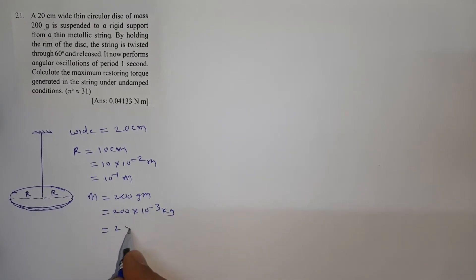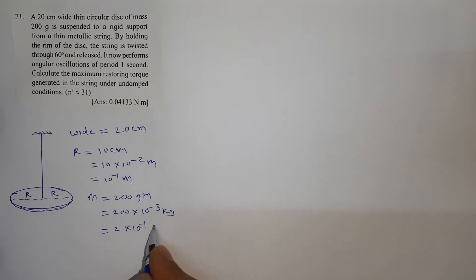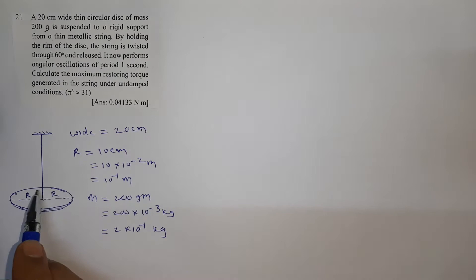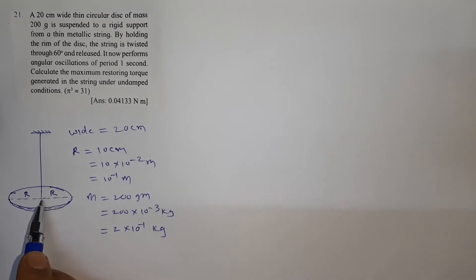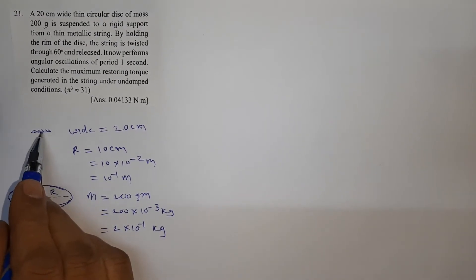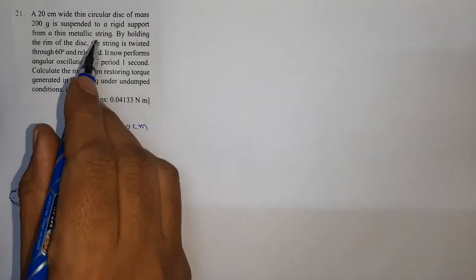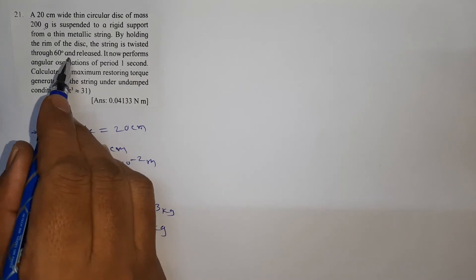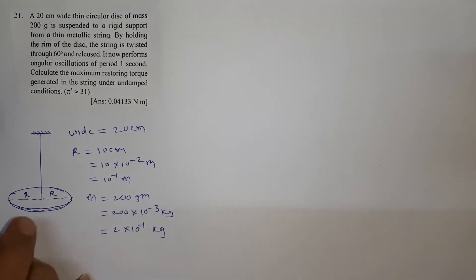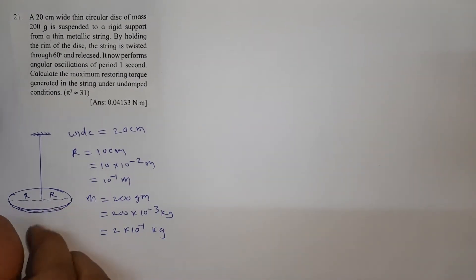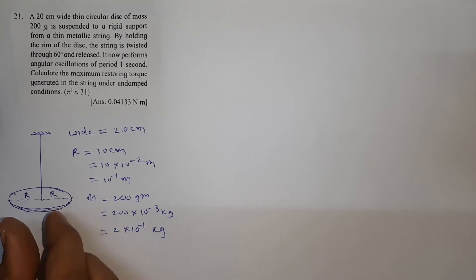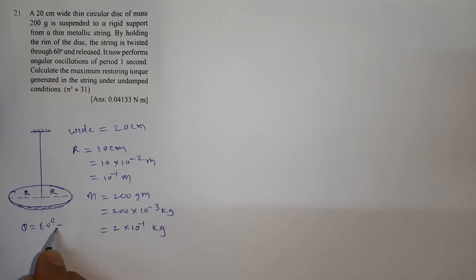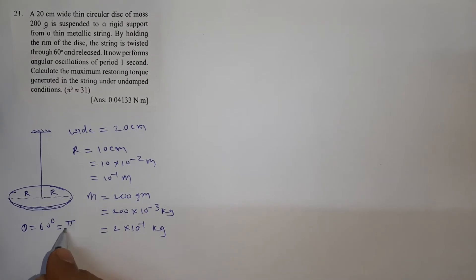The disc is suspended from a rigid support through a metallic string by holding the rim of the disc. The string is twisted through 60 degrees and released. So the angle theta is given as 60 degrees, which in radians is π/3.